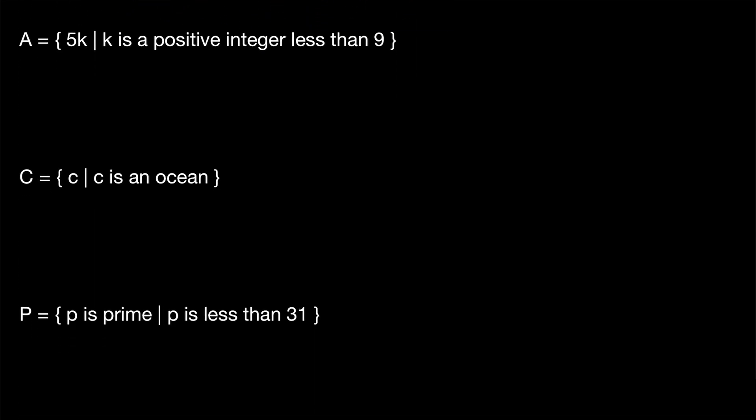Where we've got a bit more of mathy set builder notation. The set A contains all numbers 5k, where k is a positive integer less than nine. Remember the typical form of set builder notation. On the left, we're given what a general element of our set looks like. In this case, a multiple of five. And on the right, we might be given some additional restrictions. Like in this case, k has to be a positive integer less than nine.